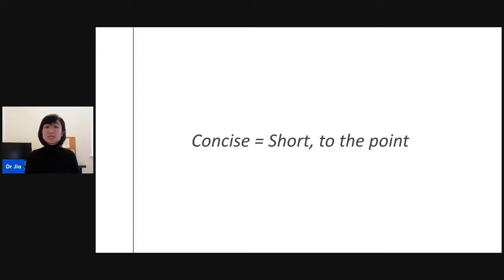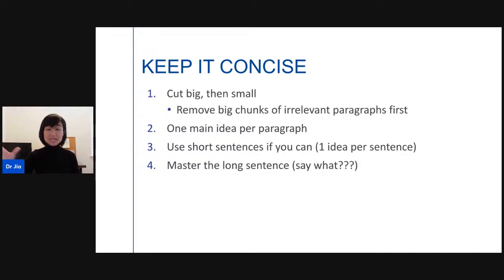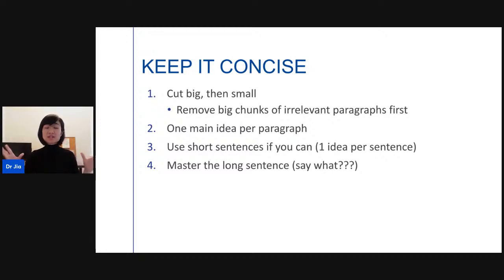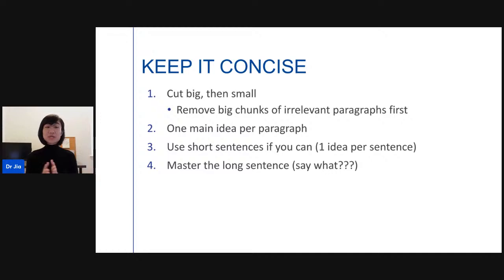The second element is to be concise — short and to the point. To keep it concise, the easiest way is: don't trim the small branches first, always cut big then cut small. Remove big chunks of irrelevant paragraphs first. You typically find fluff in the introduction and discussion sections. Second, keep one main idea per paragraph. Read each paragraph and ask: does every sentence serve the topic sentence? If it does, keep it; if not, take it out.